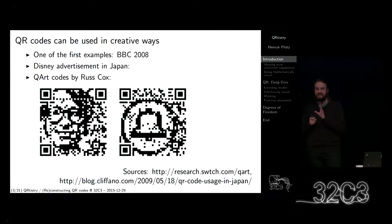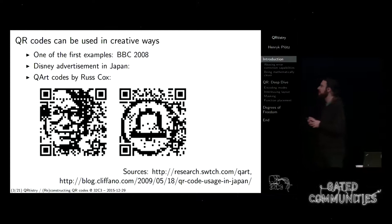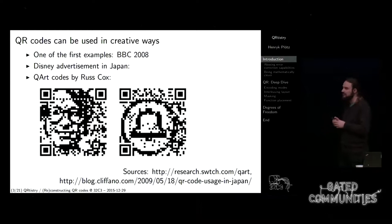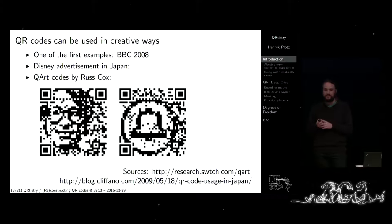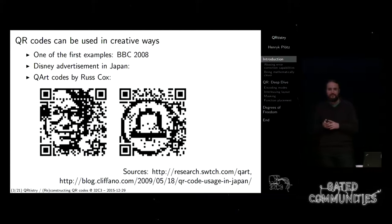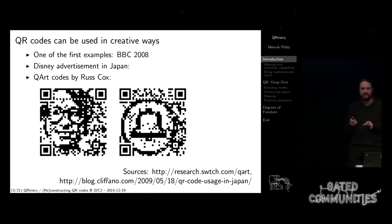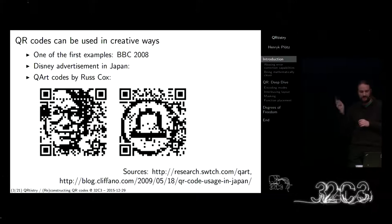This is the project by Russ Cox — QArt, he calls it. He did really great things and is able to encode pictures into most of the pixels. Those two codes are readable — they are fully valid QR codes. There is no trickery, no error correction involved. I'm not going to explain fully how that works; you can read up on the first link.